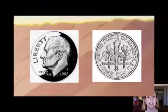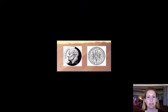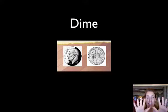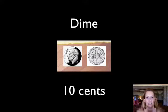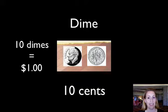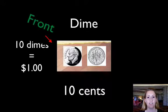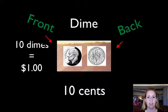Next, here is a dime. A dime is worth 10 cents. There are ten dimes in a dollar. Here is the front of a dime and this is what the back of a dime looks like.